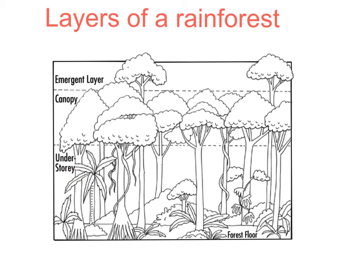In the understory, there are very many lianas which grow around the trunks of the trees. The tree trunks are also very straight and devoid of branches as the trees don't waste energy. At the bottom of the tallest trees, we have buttress roots, which are above ground because the soil is very thin.